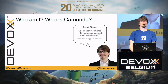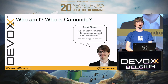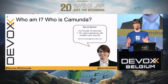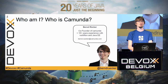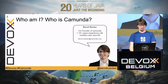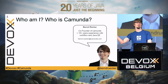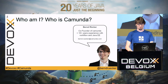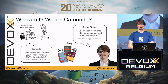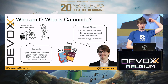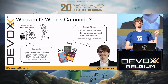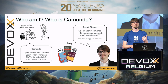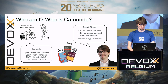So who am I? I'm Bernd Ruecker. I'm one of the two founders of Camunda. I'm basically doing workflow all my life. I started with JBPM 2 and 3 like 12 years ago, and I have a background in Java Enterprise stuff, so I wrote an EJB book quite a while ago. And I wrote that lovely real-life BPMN book as well — we have a couple of copies at the booth if you want to grab one.